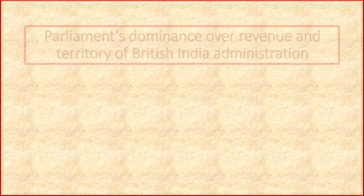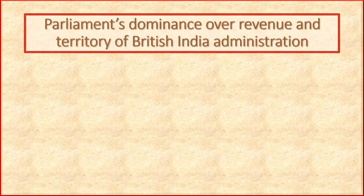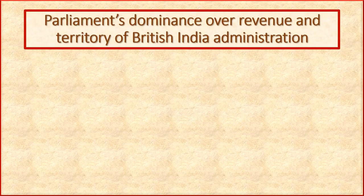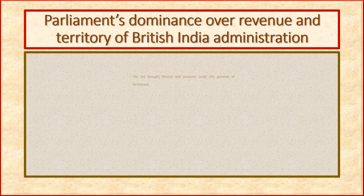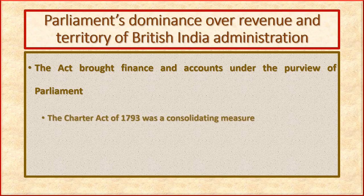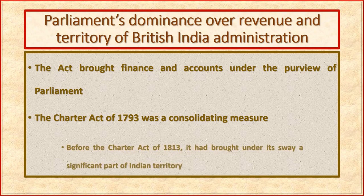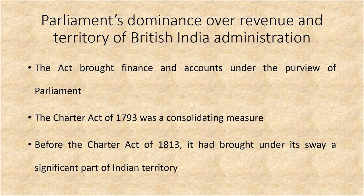Point six: Parliament's dominance over revenue and territory of British India administration. The Act brought finance and accounts under the purview of Parliament. The Charter Act of 1793 was a consolidating measure. Before the Charter Act of 1813, it had brought under its sway a significant part of Indian territory.